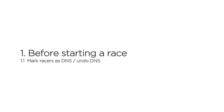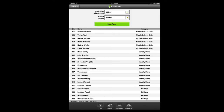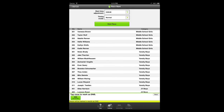It's often useful to mark racers who did not show up for the race as DNS before the race starts. That way, you'll know who's still out on course towards the end of the race. From the race start panel, tap the DNS toolbar button and tap the racer name on the list above. Note that you can tap multiple racers in a row, then close the panel.